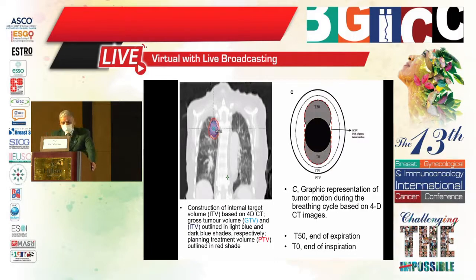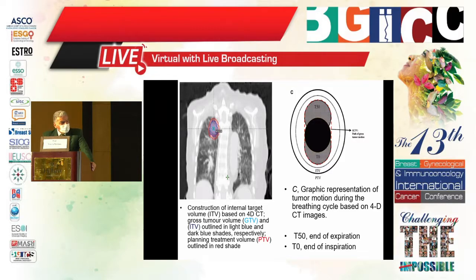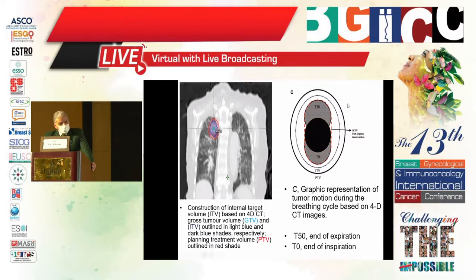Here is a lesion at the right lung apex. We can perform construction of the internal target volume based on 4DCT: the gross tumor volume in blue and ITV outlined in light blue and dark blue shades respectively, with the planning treatment volume outlined in another shade. A graphic representation of tumor motion during the breath cycle based on 4DCT is shown — T50 at end of expiration and T0 at end of inspiration.